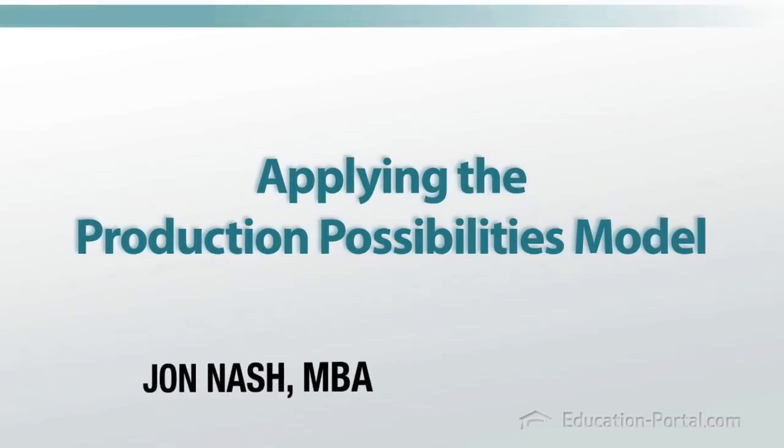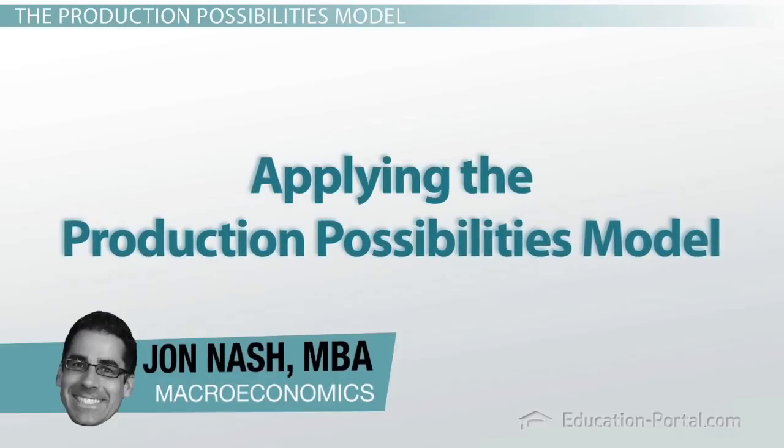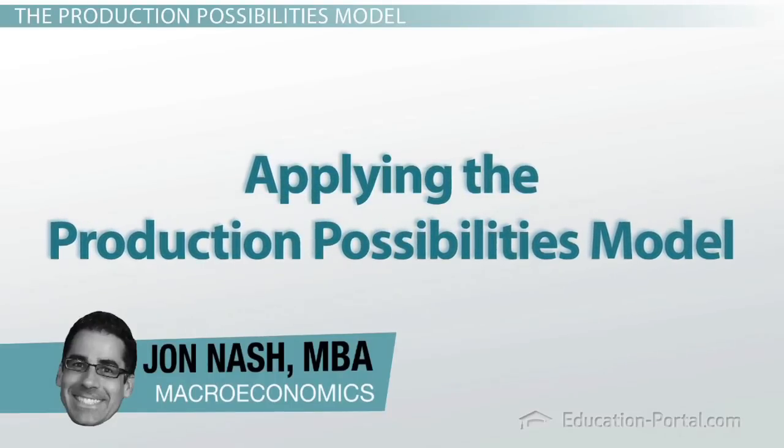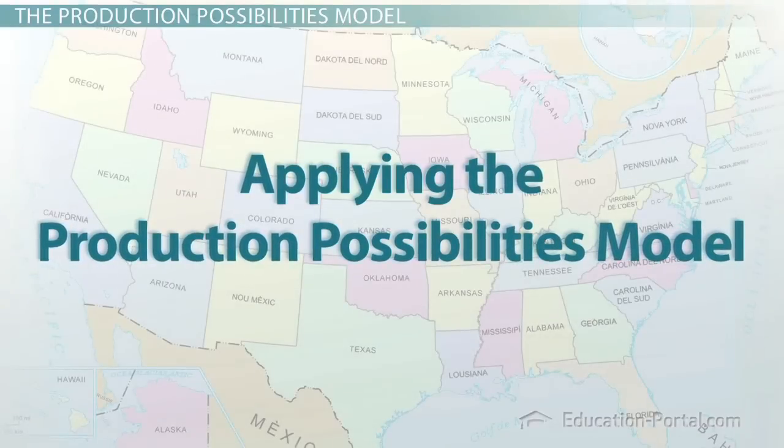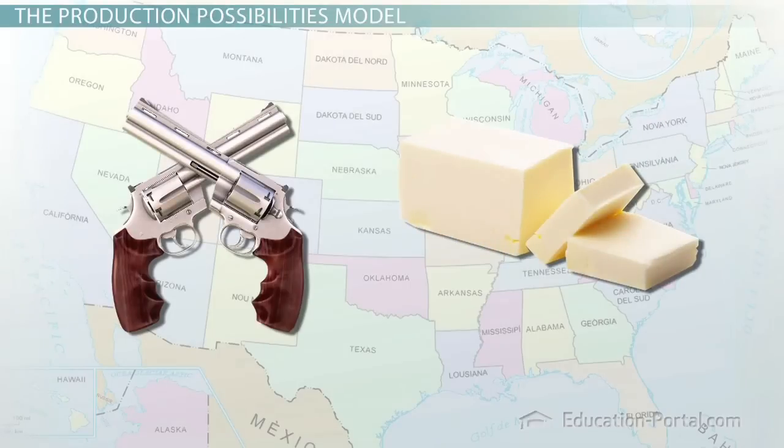We're talking about the production possibilities model in this lesson, and the classic version of the production possibilities model is the comparison between two goods that a nation can produce, either guns or butter, and it must choose between these two goods.